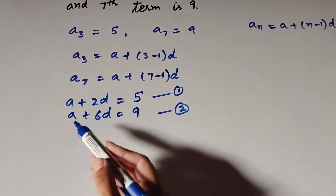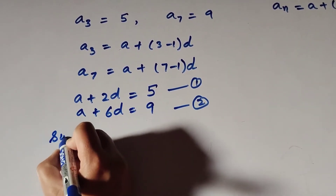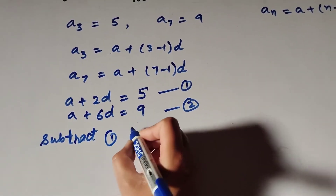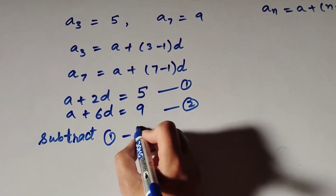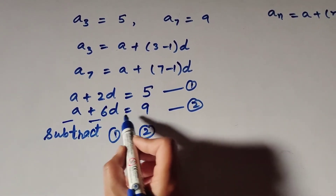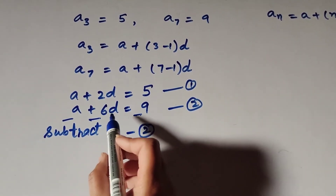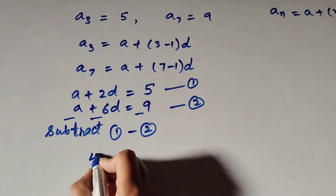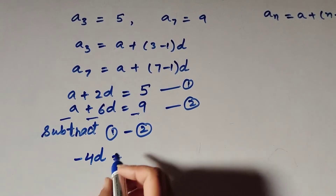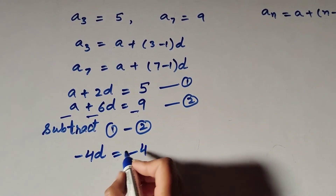Now we subtract equation 2 from equation 1. When we subtract, we apply the minus sign throughout. a minus a equals 0. Then 2d minus 6d equals minus 4d. And 5 minus 9 equals minus 4. So minus 4d equals minus 4.